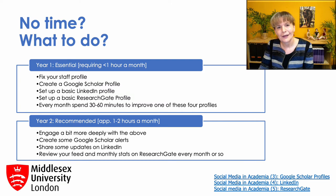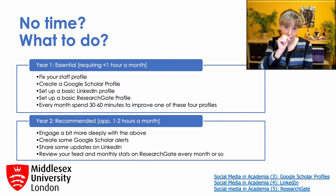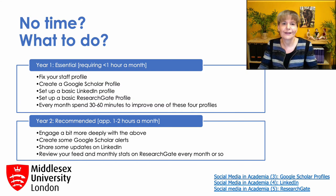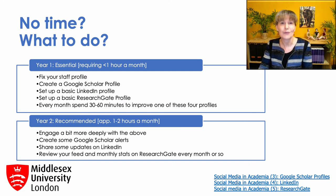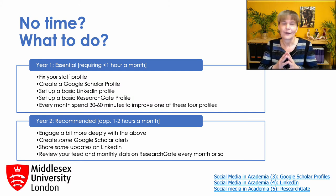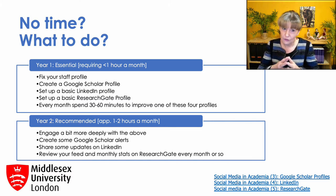What if you feel you really can't spare any time on this? Here is what I suggest. I suggest you take a two-year plan in which you only spend one or two hours a month. Obviously this is just a suggestion — modify it to serve your own preferences and situation. I do think that everyone who takes their academic career seriously should be able to invest one hour a month to build their own professional reputation. Your first profile should really be your staff profile, which should take less than an hour — so you can do that in the first month. Then in the second month, I would suggest you create a Google Scholar profile and a LinkedIn profile.